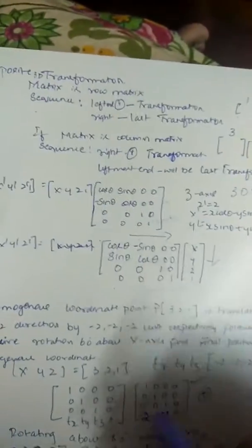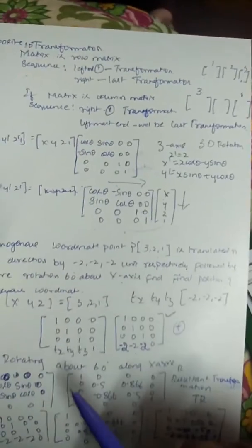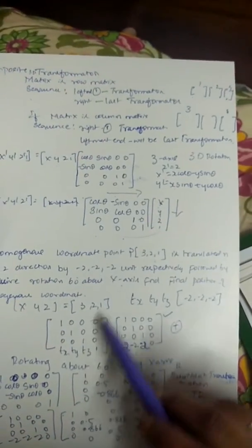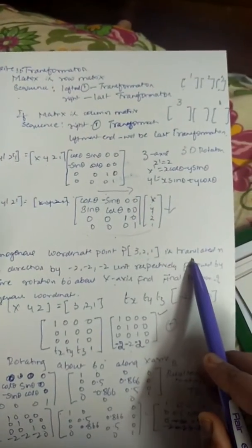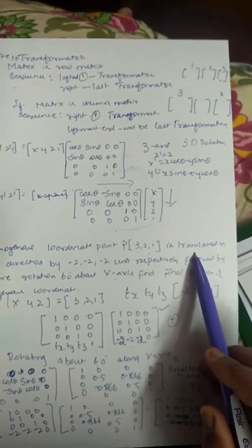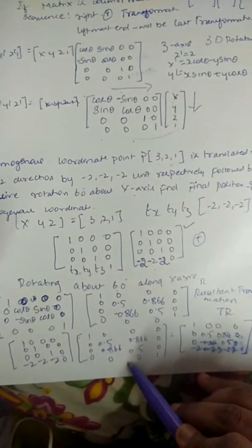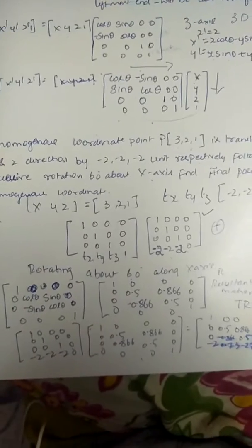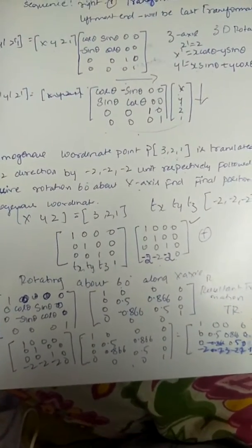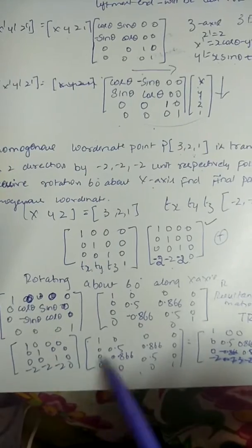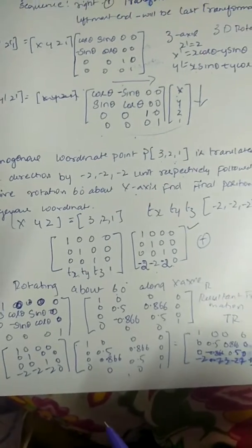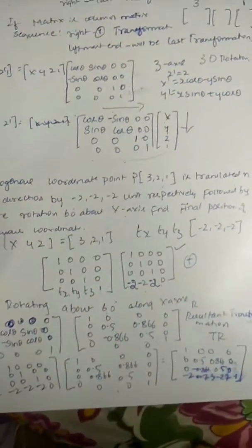The new final coordinates are approximately (1.86, 4, minus 0.5, 1). Since this was a row matrix, you can observe that the first transformation — translation — is placed first on the left, followed by the second transformation matrix — rotation — on the right. If it were a column matrix, we would swap the order. Thanks for watching the video.